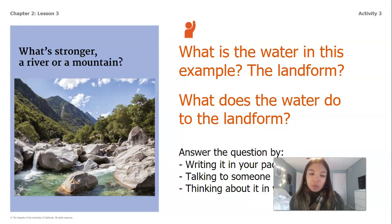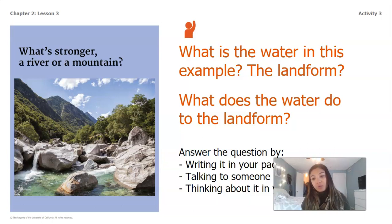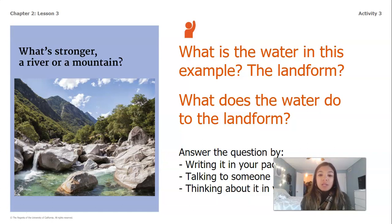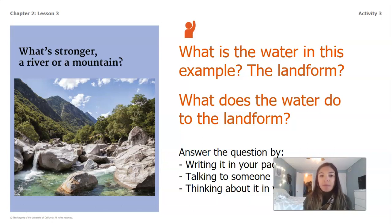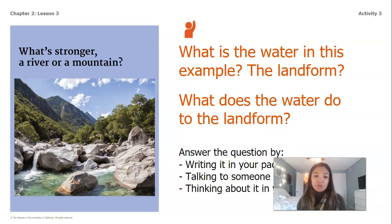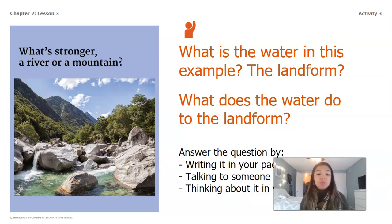So in this example, the water would be the river that's flowing through, and the example of the landform would be the mountain. When thinking about what the water does to the landform, the river is changing the shape of the mountain over time. This is probably a pretty slow process, but as the water flows through the mountain, it's making it become smaller and more rounded. That's how it is changing.